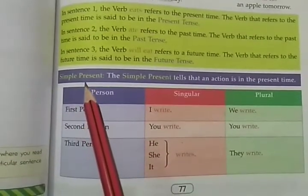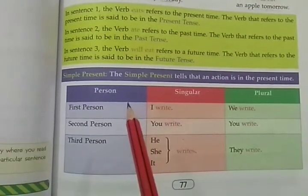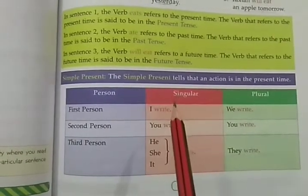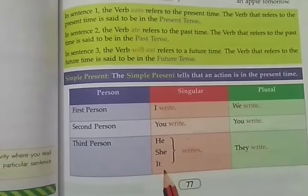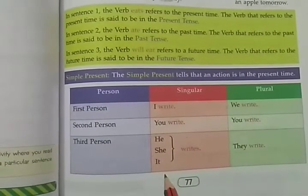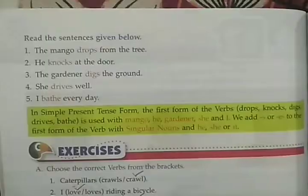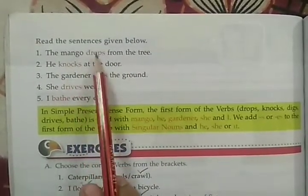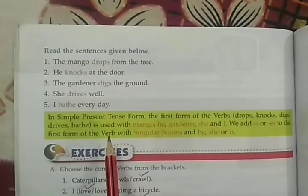So firstly remember the formula of present tense. Present tense में हम first form of verb का s या es के साथ use करते हैं। I, we, you, they के साथ या कोई plural noun हो तो सिर्फ first form of verb का use करेंगे। He, she, it या कोई singular noun हो तो first form of verb के साथ s या es का use करेंगे। Examples: the mango drops from that tree — mango is singular, so first form of verb with s. He knocks — first form with s. The gardener digs — first form with s. So you have to read the rules yourself.